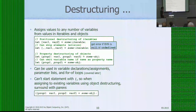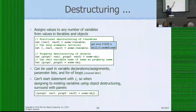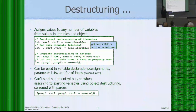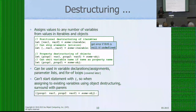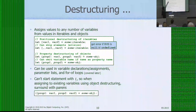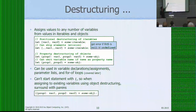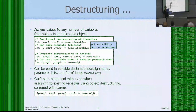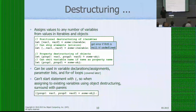In object destructuring, you have an object on the right-hand side and on the left something that looks like an object, but you're specifying variables you want set to values of properties from the right-side object. The keys you specify are the names of properties you want to get out, and the values are names of variables you want to set. Often there's one good name for a thing, so you can omit the redundant part — just say `prop1` and it creates a variable called `prop1` from the property also called `prop1`.